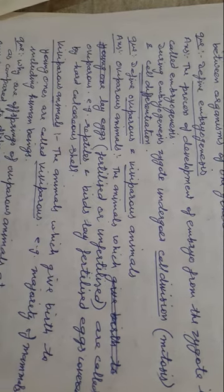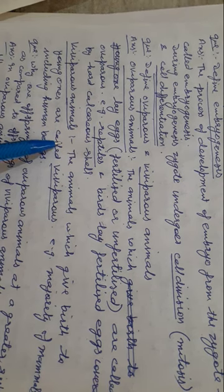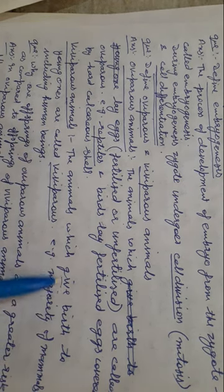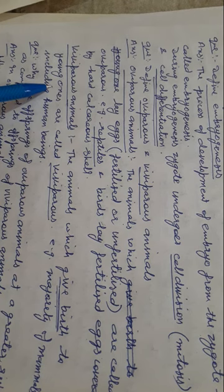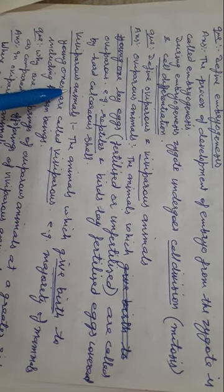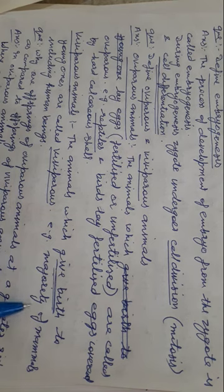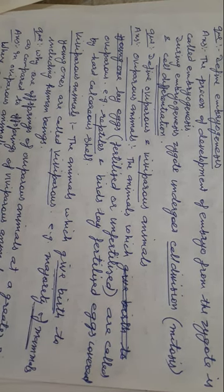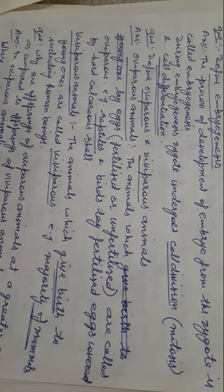Viviparous animals are those which give birth to young ones — fully developed young ones. They are called viviparous animals. For example, the majority of mammals. Mammals bear mammary glands — milk-producing glands — and hairs in their bodies, including human beings.